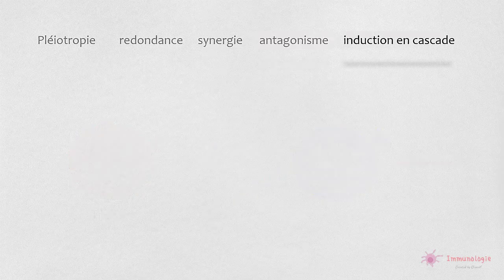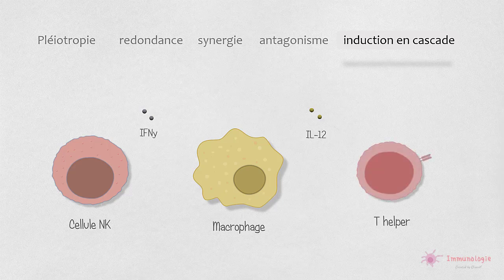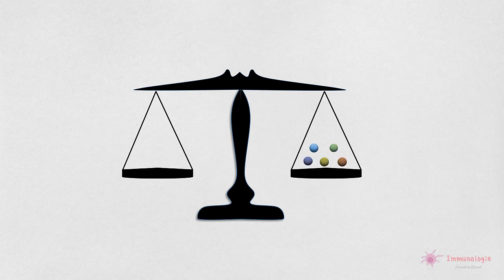La cinquième caractéristique est l'induction en cascade, dans laquelle une cytokine sécrétée par un type spécifique de cellules peut activer des cellules cibles pour produire des cytokines supplémentaires. Par exemple, les cellules tueuses naturelles activées sécrètent de l'interféron gamma, qui à son tour active les macrophages pour qu'ils sécrètent de l'interleukine 12, qui active ensuite les cellules T auxiliaires pour produire d'autres cytokines. Une cascade de cytokines produit un spectre d'activité qui conduit à la génération rapide de réponses immunitaires innées et adaptatives.